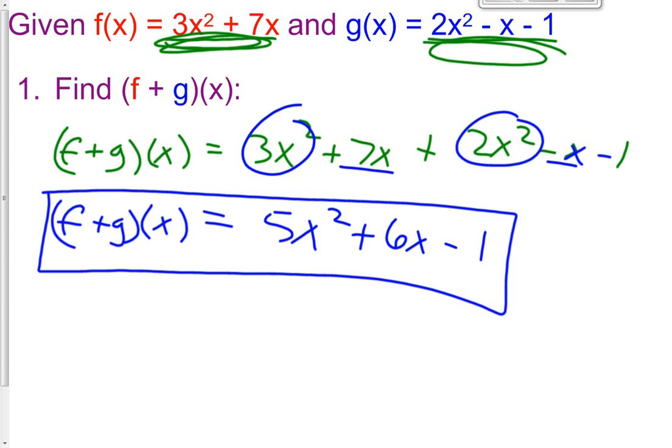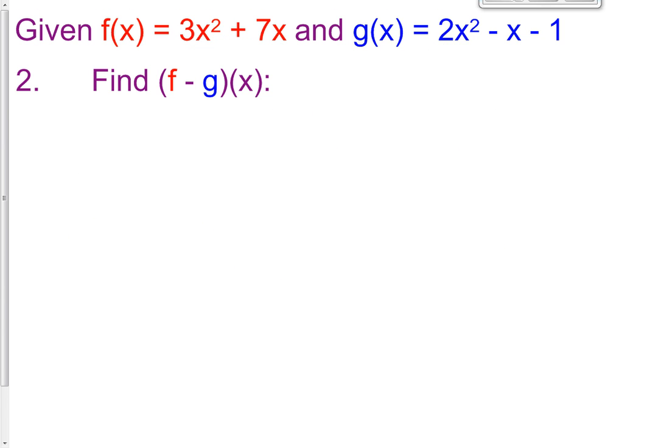So very similar to the next one. Now instead of adding f plus g of x, it's going to be f minus g of x. So we're going to subtract the 2. So f comes first. 3x squared plus 7x, and we're going to subtract g(x), which is 2x squared minus an x minus 1.